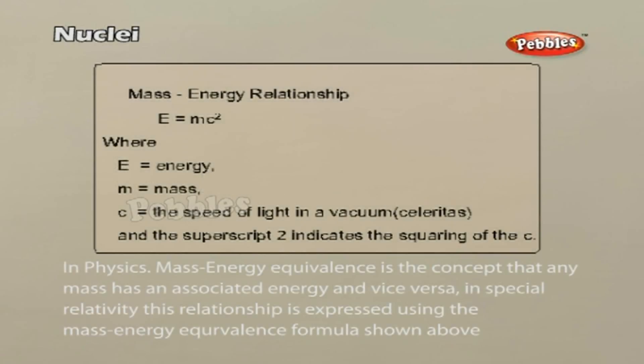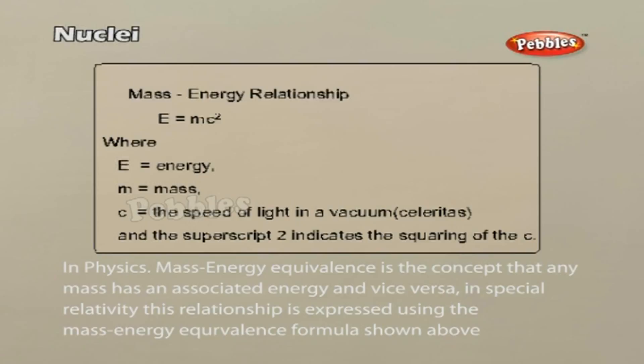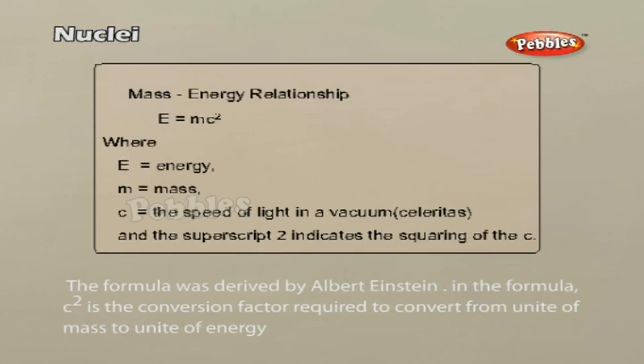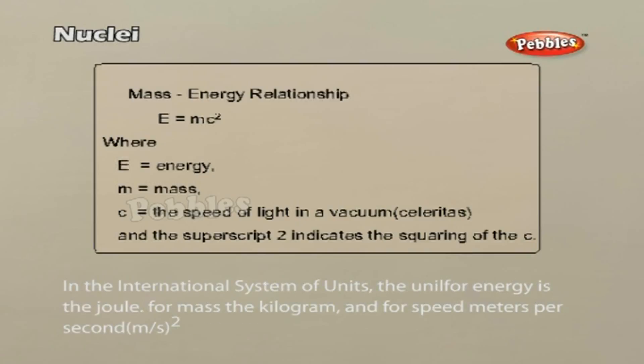Mass Energy. In physics, mass energy equivalence is the concept that any mass has an associated energy and vice versa. In special relativity, this relationship is expressed using the mass energy equivalence formula shown above. The formula was derived by Albert Einstein. In the formula, c square is the conversion factor required to convert the units of mass to units of energy. In the international system of units, the unit for energy is the joule. For mass, the kilogram. And for speed, the meters per second or m by s, the whole square.